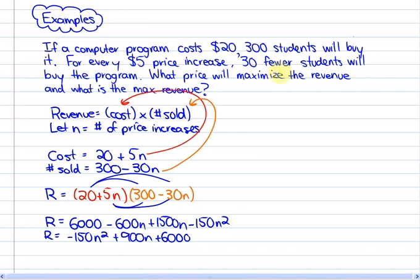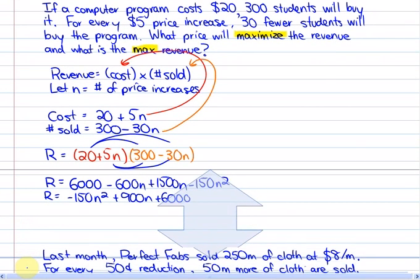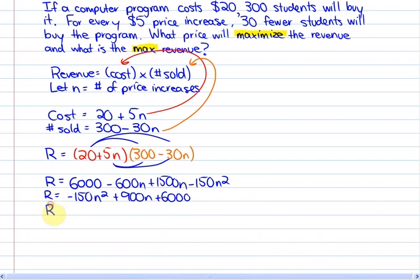Now the key word that we looked at in the last lesson is this word maximize, max, minimize, optimize. And we discussed how it would be valuable to know where the vertex is, because where the vertex is is where either the maximum or the minimum of this particular function will occur. So what I'm going to do is complete the square with this example.